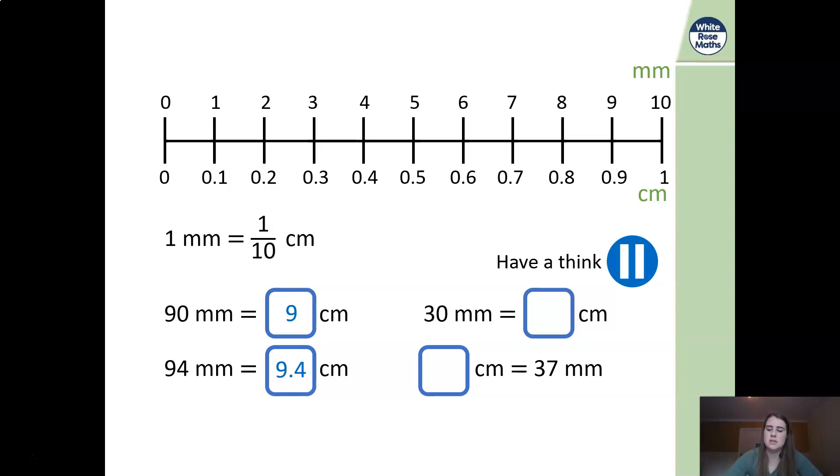So 30 millimetres is three centimetres. For 37 millimetres, divided by 10, it's 3.7. If you imagine the decimals then, divided by 10, you move one decimal place, your numbers move one decimal place, 3.7.